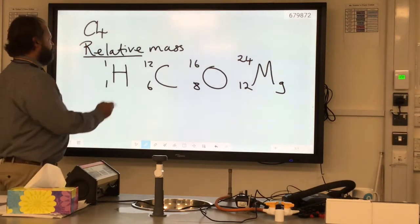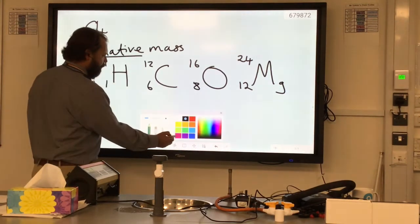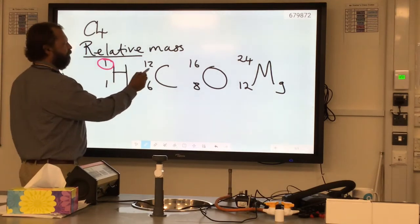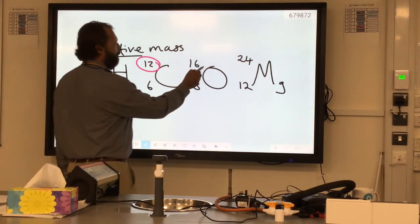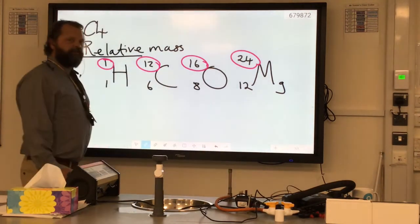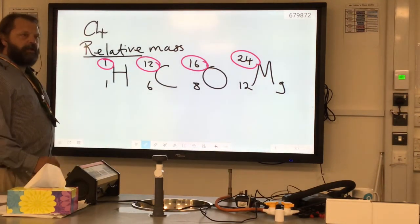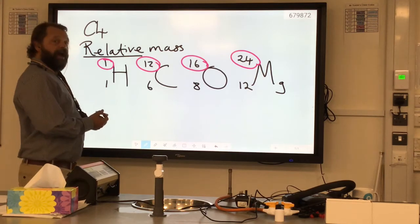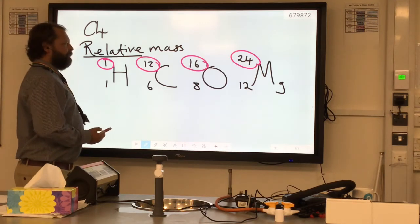So this number here at the top, the big one - hydrogen has a mass of one, carbon of 12, oxygen of 16, magnesium of 24 - gives us a measure of how heavy these atoms are compared to each other.